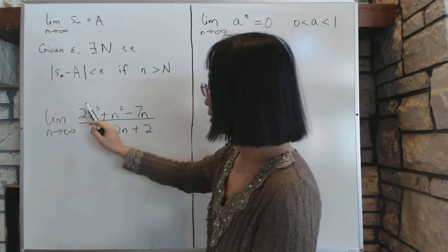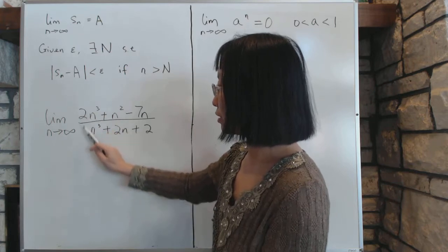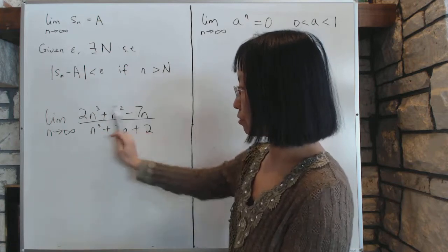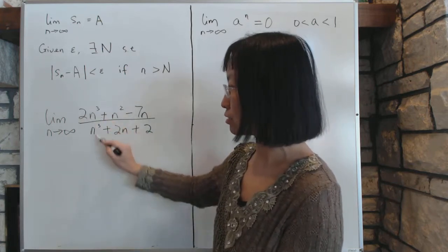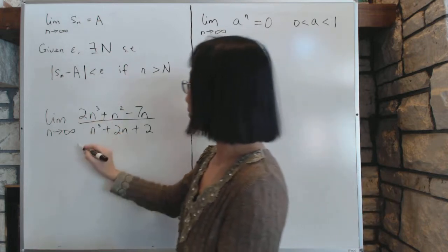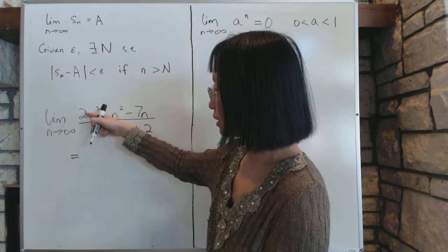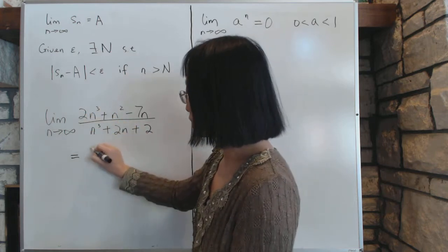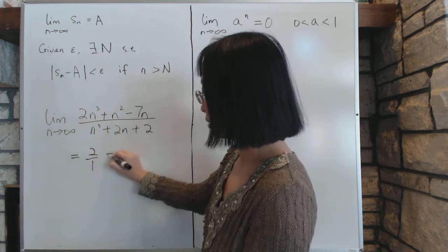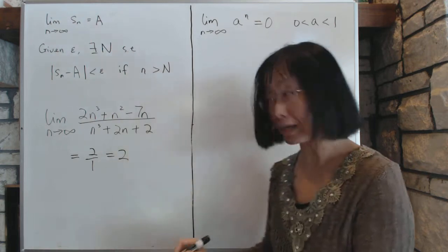Now, in that case, then the limit is simply their coefficients. You do not care about all this. All this is not important because these dominate. So then you have the answer. The limit as it approaches is simply the coefficient of each term, which is 2 over 1 equals 2. And that is your answer.